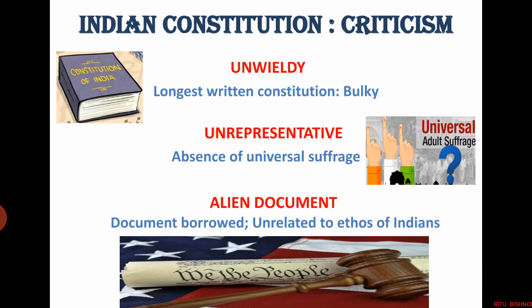The third criticism against our constitution is that it is an alien document borrowed from the West. But our constitution makers did not blindly borrow — they changed and adapted the borrowed provisions according to our conditions. If it was based only on Indian culture, consisting of caste inequalities, child marriage and the dowry system, then progress would not have been possible.